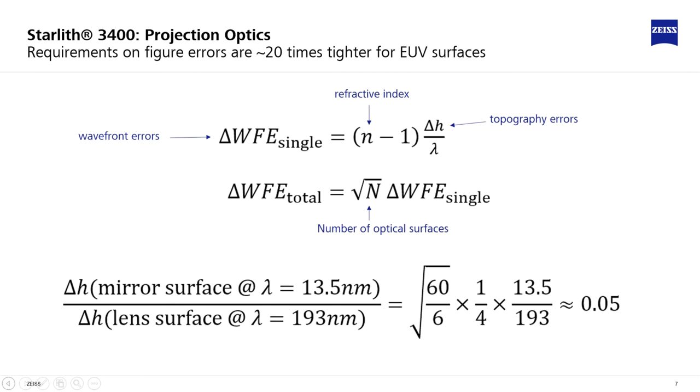For an EUV system with 6 mirrors having the same wavefront quality as a deep UV system with 60 surfaces, the surface quality requirements scale like this. The requirements on low figure errors are approximately 20 times tighter for EUV surfaces.